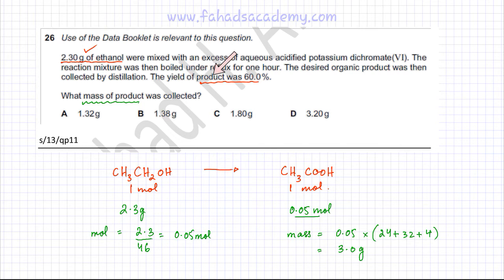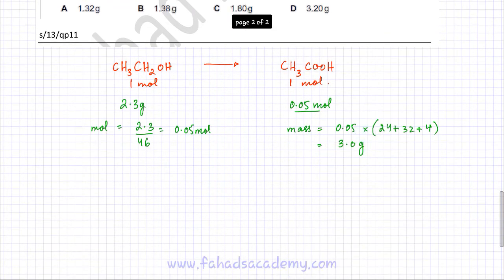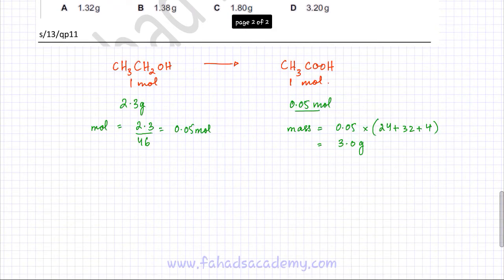But we need to solve this last part. What he's saying is that the yield of the product was 60%, which basically means if it was 100%, then theoretically 3 grams of ethanoic acid should be produced. But since the yield is 60%, the formula of yield is: yield equals actual or experimental over the theoretical value times 100.